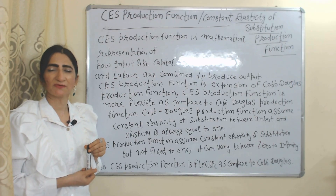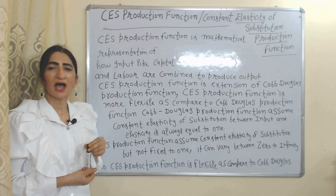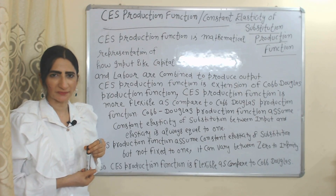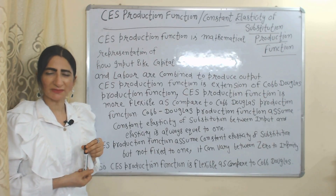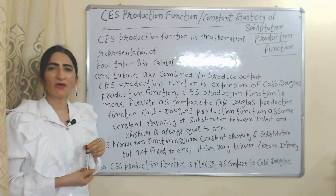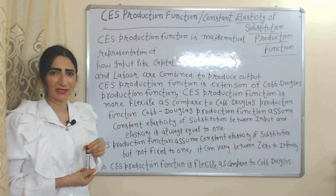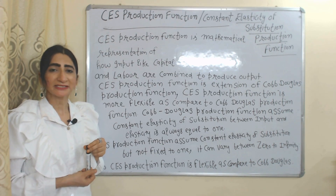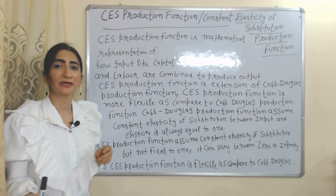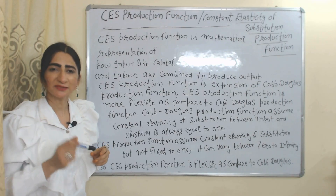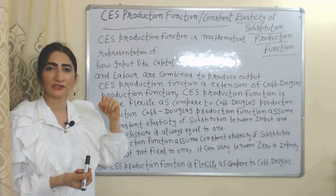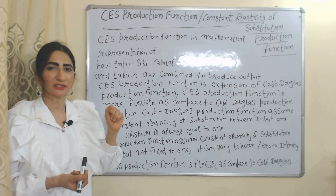CES production function is a mathematical representation which shows how inputs like labor and capital are combined to produce output. CES production function is an extension of Cobb-Douglas production function.